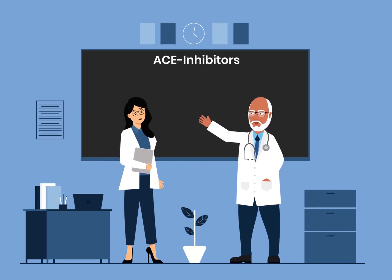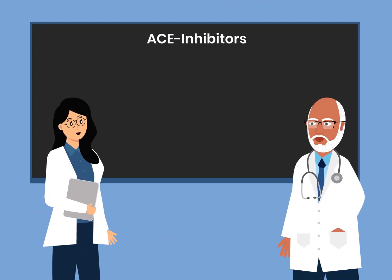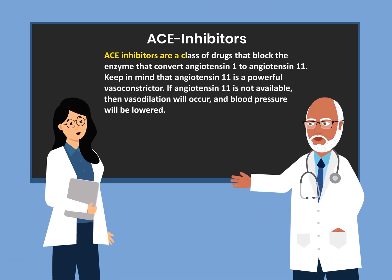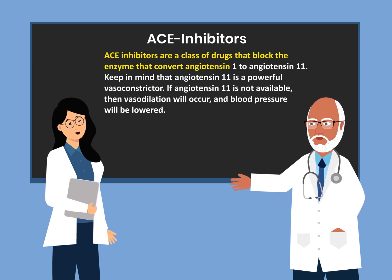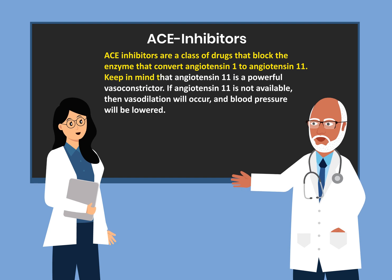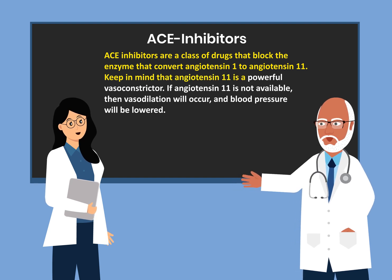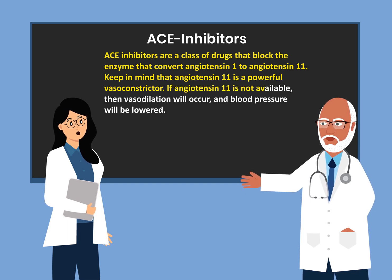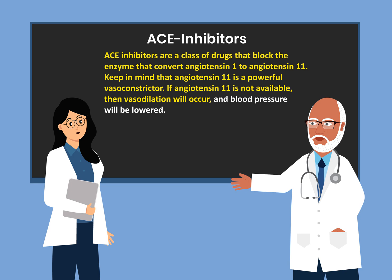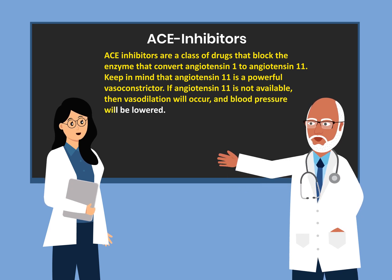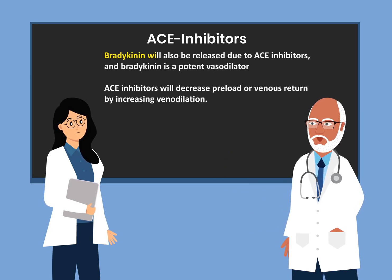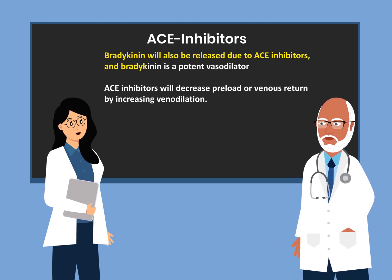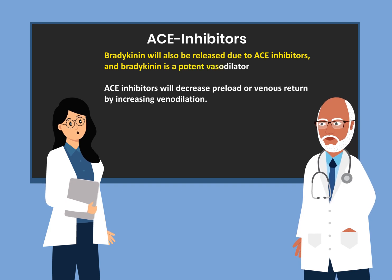Today I want to talk to you about ACE inhibitors. ACE inhibitors are a class of drugs that block the enzyme that converts angiotensin 1 to angiotensin 2. Keep in mind that angiotensin 2 is a powerful vasoconstrictor. If angiotensin 2 is not available, vasodilation will occur and blood pressure will be lowered. Bradykinin will also be released due to ACE inhibitors, and bradykinin is a potent vasodilator.